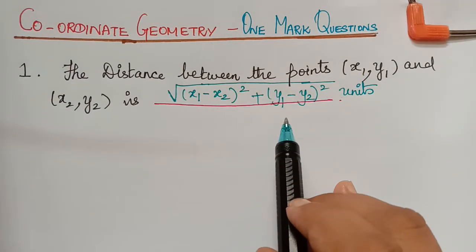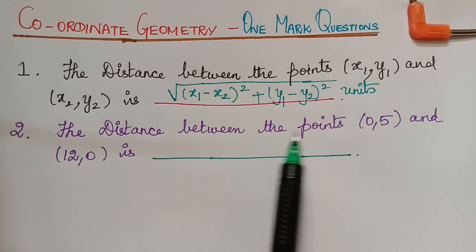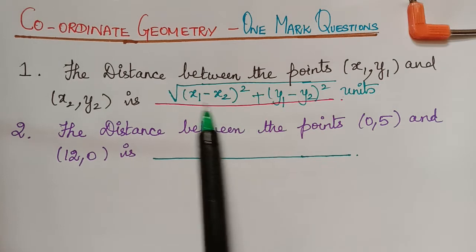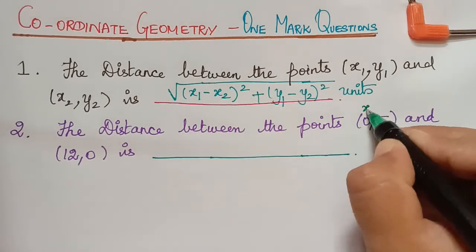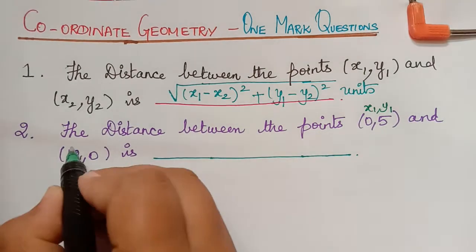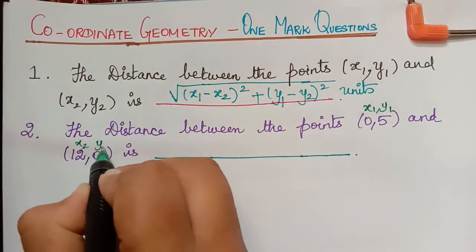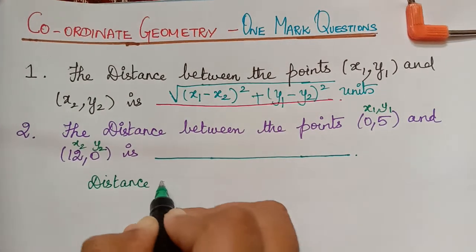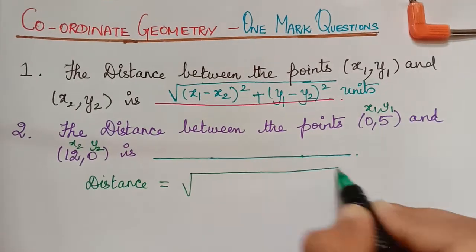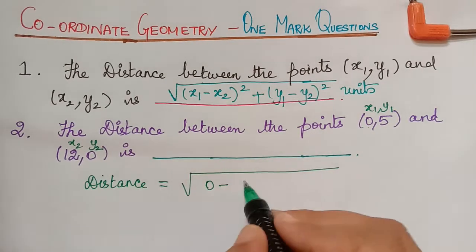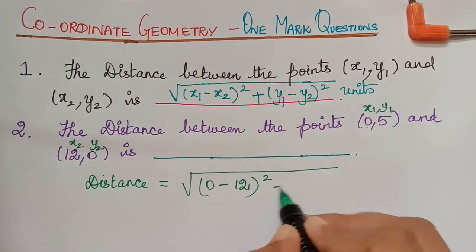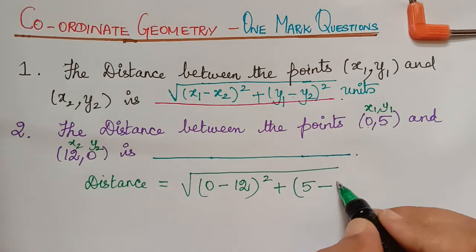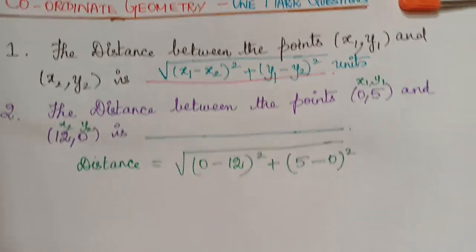So this is the answer. The next question is: the distance between the points (0, 5) and (12, 0) is dash. We have to use this formula, taking (0, 5) as x1 comma y1 and (12, 0) as x2 comma y2 and substitute. So the distance will be equal to square root of (x1 is 0 minus x2 is 12) whole square plus (y1 is 5